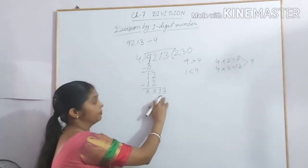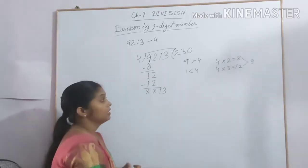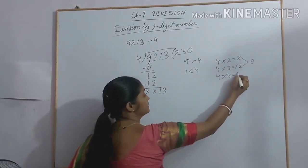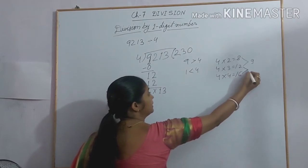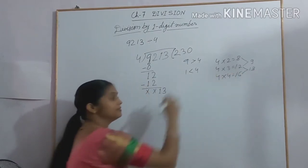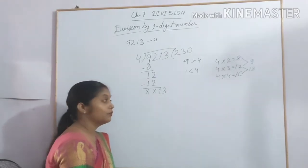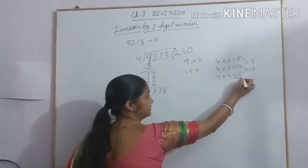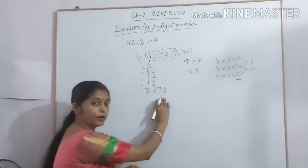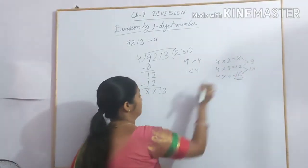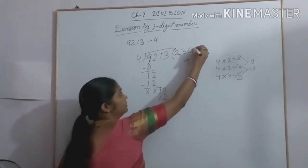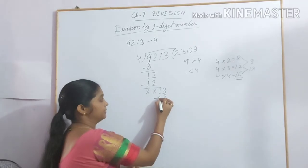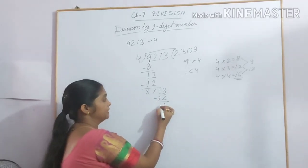Now the number becomes 13. Look at the table of 4. 4 times 3 is 12 and 4 times 4 is 16. 13 lies between 12 and 16. So we can write the smaller number. Here 16 is greater than 13, so we can't write 16 here. So we write here 12. 4 times 3 is 12. Now subtract this. We get here 1.